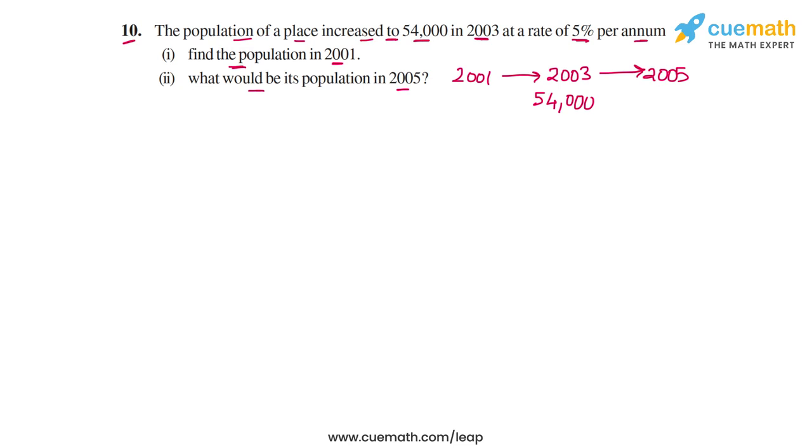Now, the idea behind growth is actually similar to compound interest. If you have the rate of growth, in this case it's 5% per annum, you can find out the growth factor per year. So I like to call it the growth factor. The growth factor is 1 plus the rate of growth, so 1 plus 5 by 100 in this case, which is 1.05.